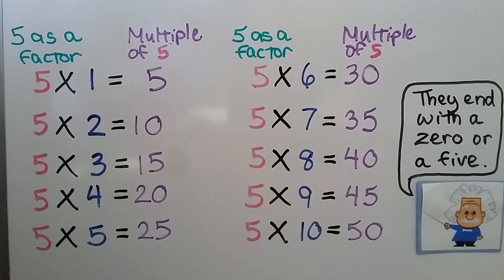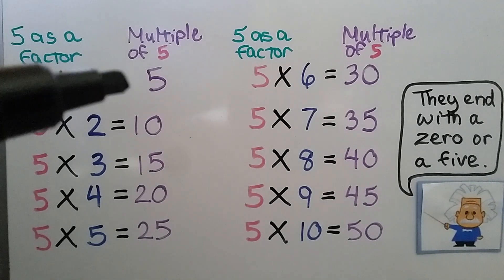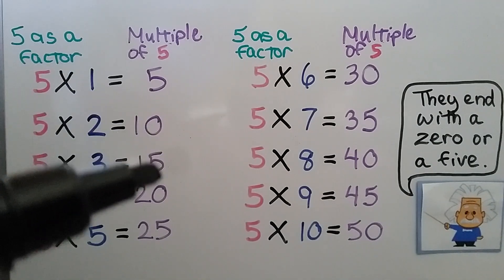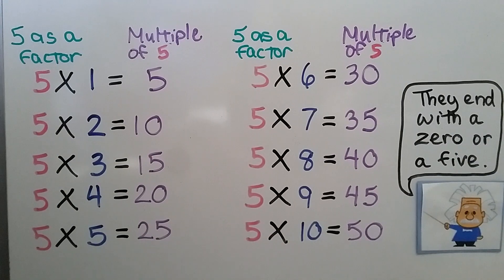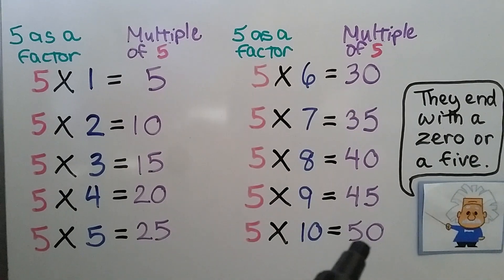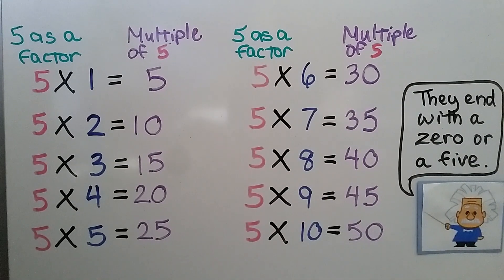You can see that each of the products ends with a 5 or a 0 — 5, 0, 5, 0. They all end with a 5 or a 0.